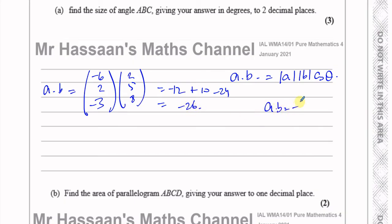We know A dot B equals negative 26. Now you need to find the magnitude of the vector A, which is going to be the square root of, I can ignore the signs, 36 plus 4 plus 9, that's going to be 49, which is 7. 36 plus 4 is 40, 40 plus 9 is 49, that's 7.